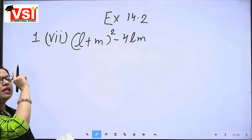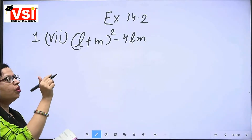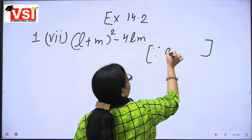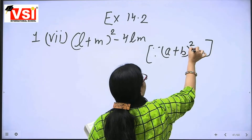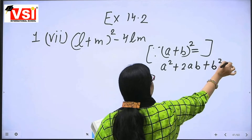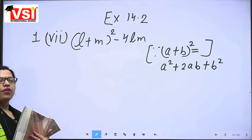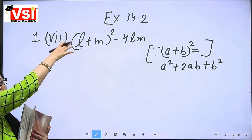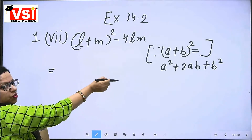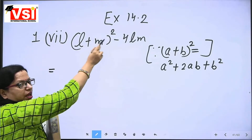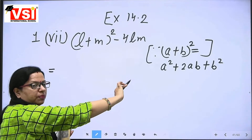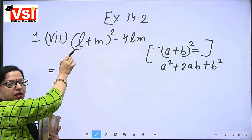We have L plus M whole square here. So according to the first identity: A plus B whole square equals A square plus 2AB plus B square. We have to open this whole square format. A value is L and B value is M, so we will replace A and B with L and M.